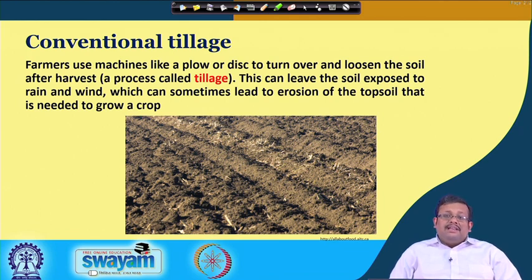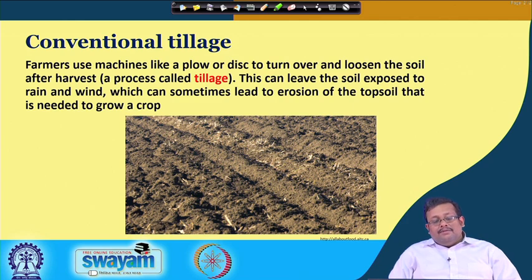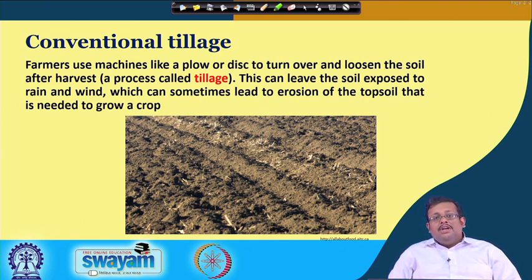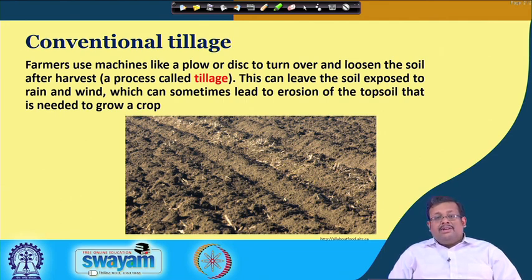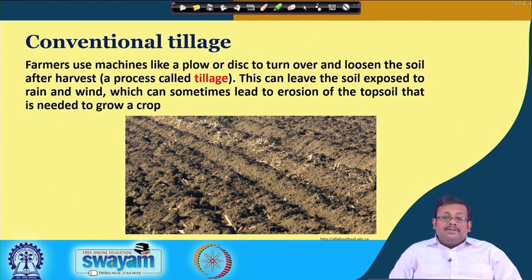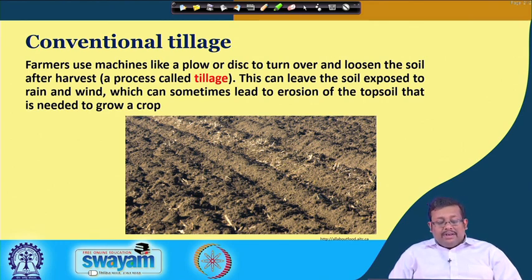In conventional tillage, different types of implements or equipment are used to make the soil more loose — in other words, to decrease the bulk density of the soil — so that favourable physical conditions for crop growth are maintained, with more aeration and better air and water movement. However, conventional tillage has a limitation: it exposes the soil to different types of wind and water erosion.